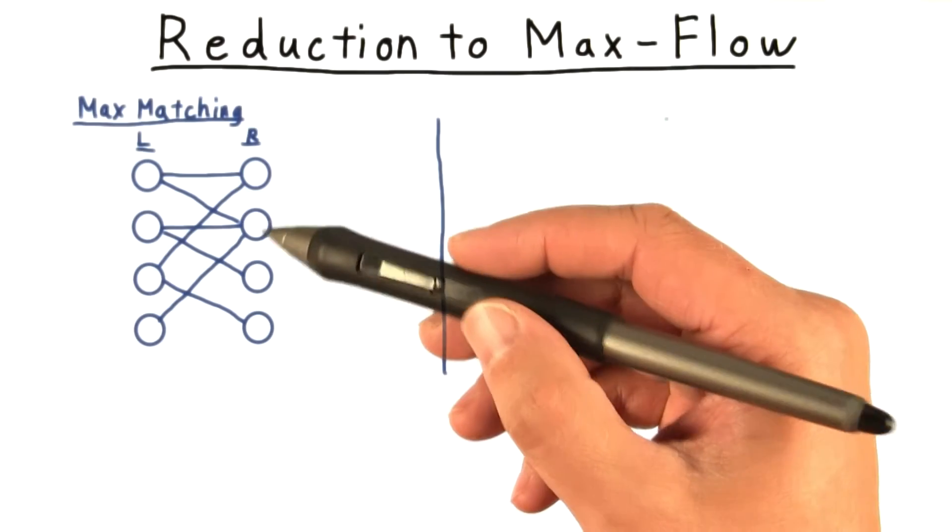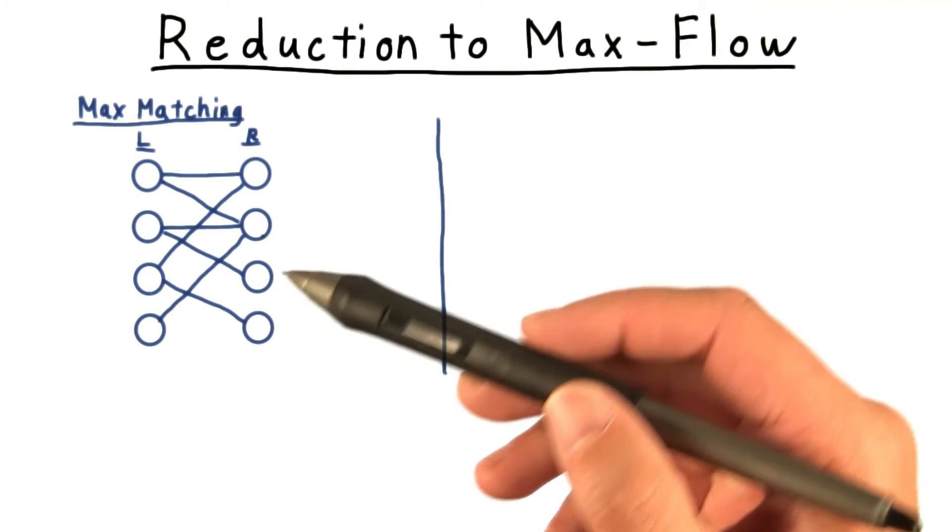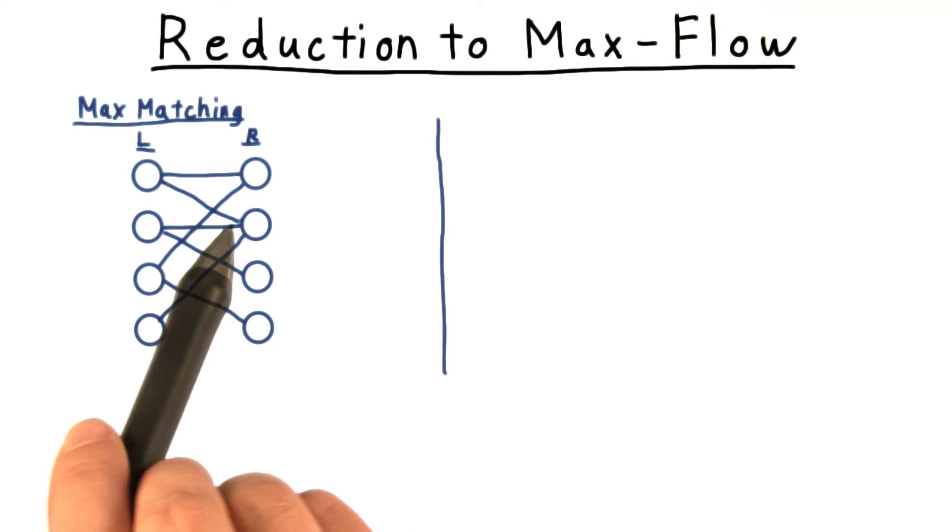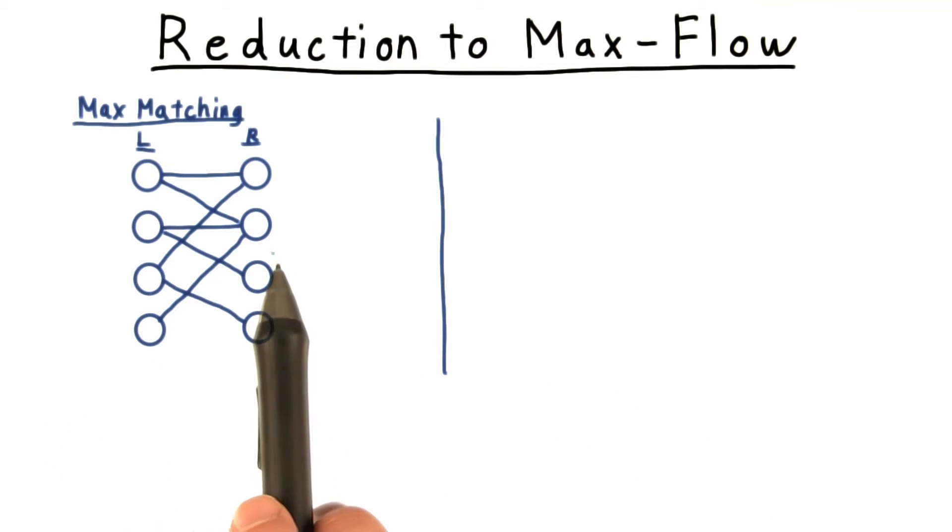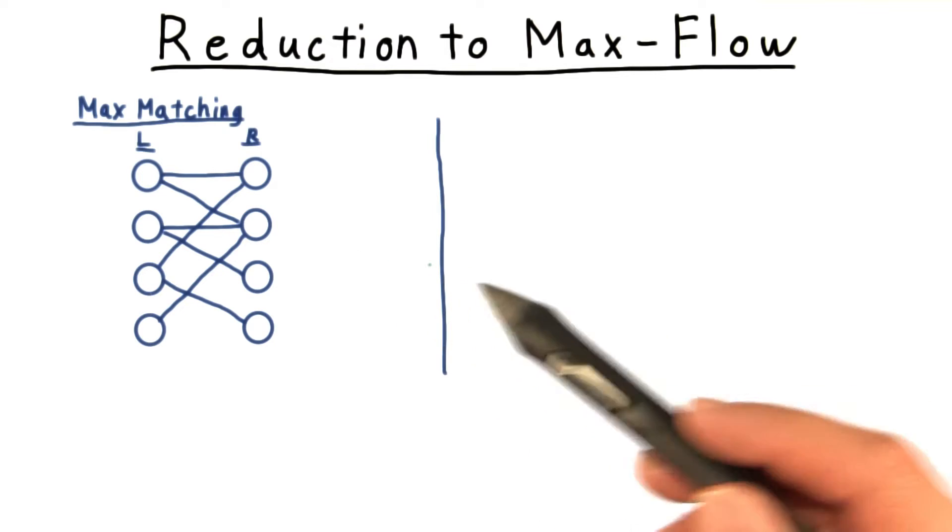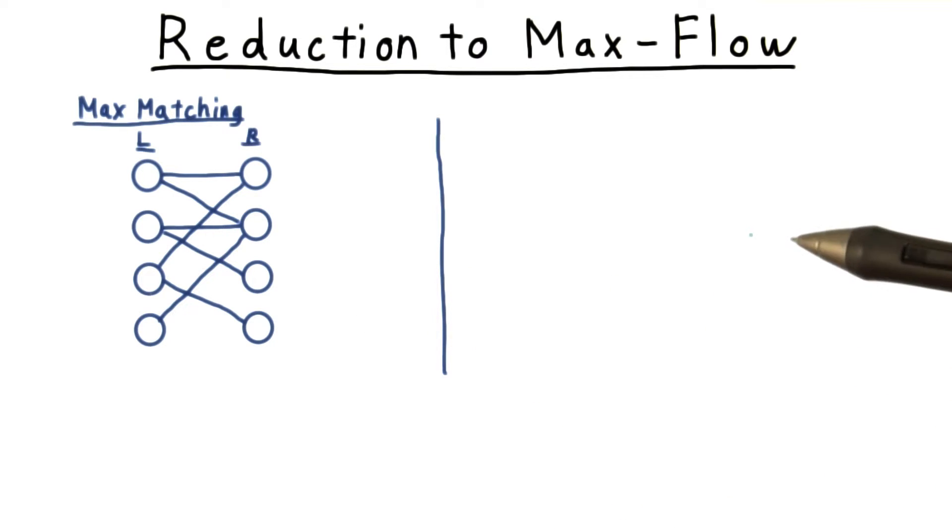At this point, we've defined a bipartite graph and the notion of a matching. Now we're going to see the connection with maximum flow. Intuitively, a maximum matching problem should feel like we're trying to push as much stuff from one side of the partition to the other. It should be no surprise then that there turns out to be an easy reduction to the maximum flow problem, which we've already studied.